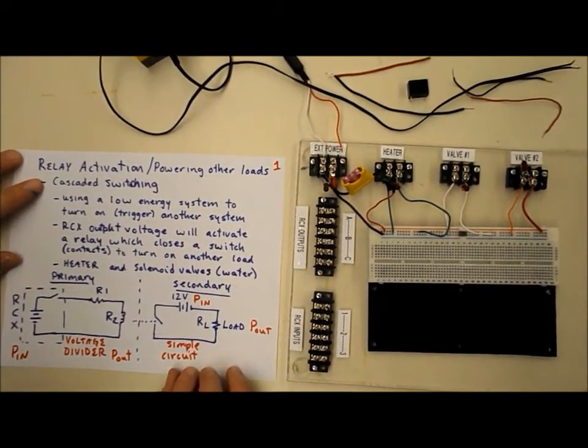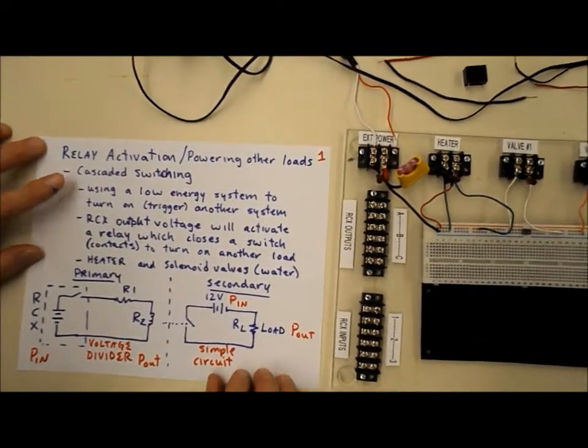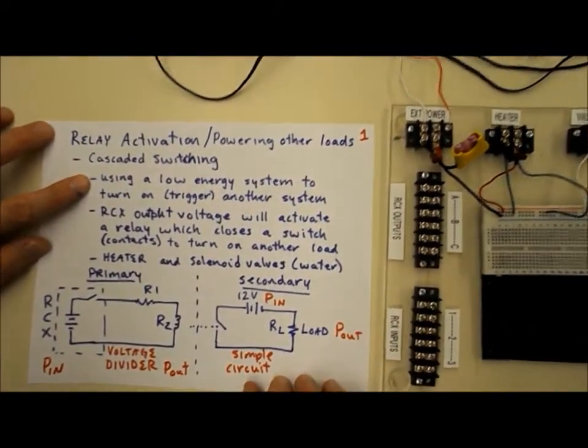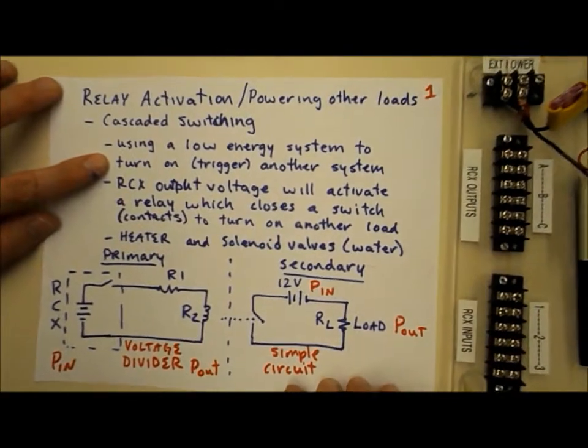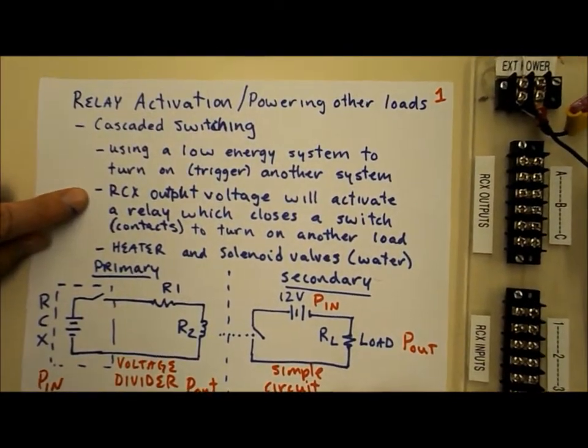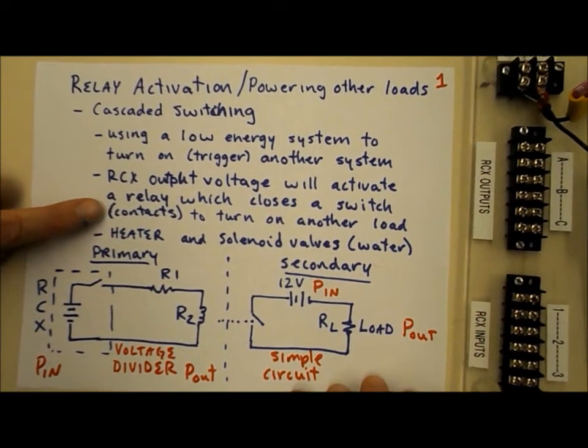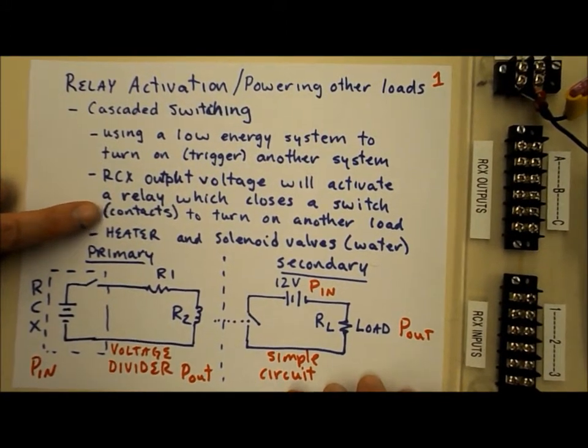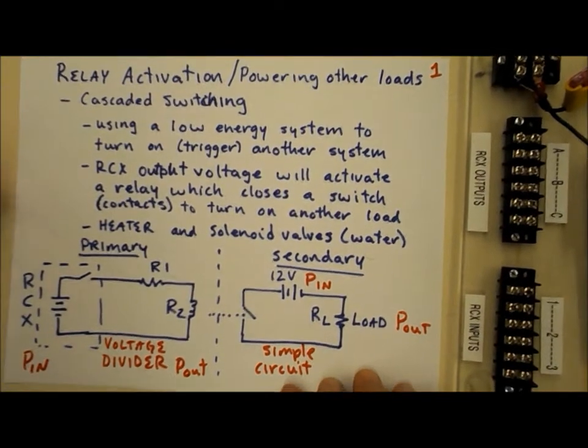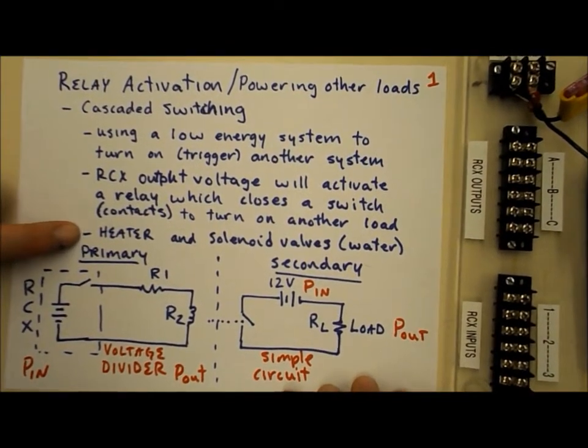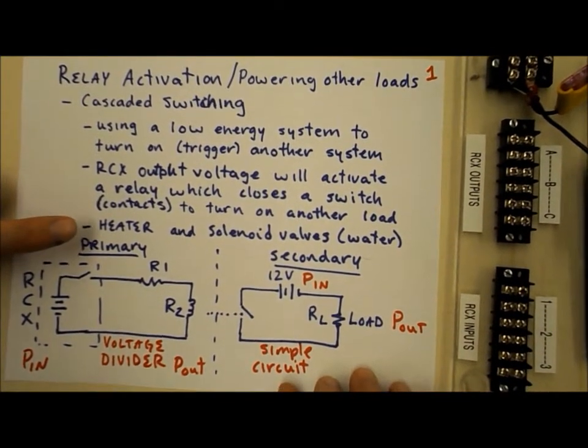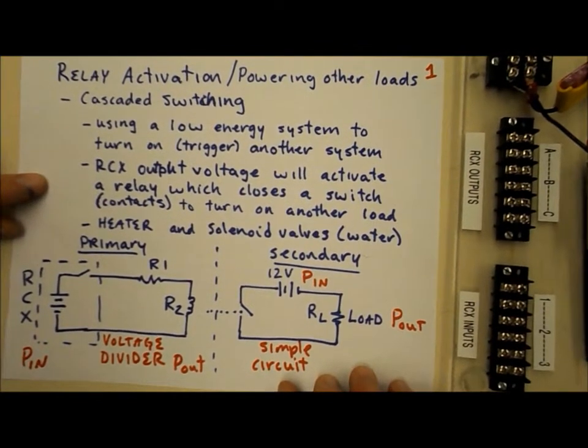We're discussing cascaded switching, which is using a low-energy system to turn on or trigger another system. Our RCX output voltage will activate a relay, which closes a switch or a set of contacts, and that turns on the other load. Our loads for our fish tank project are going to be a heater and two solenoid valves that we'll open and close later.